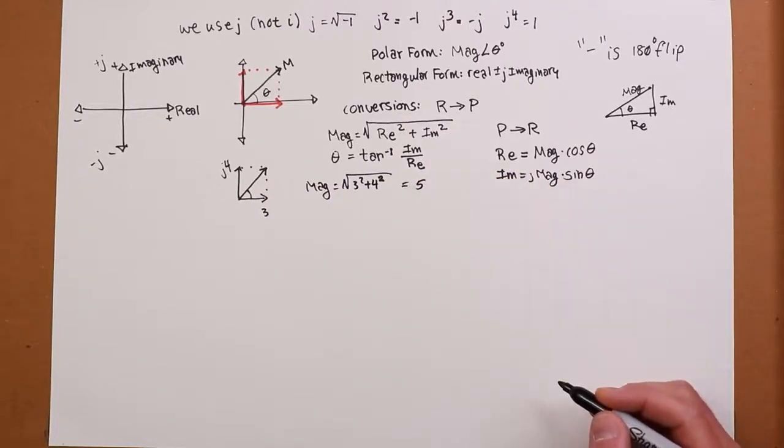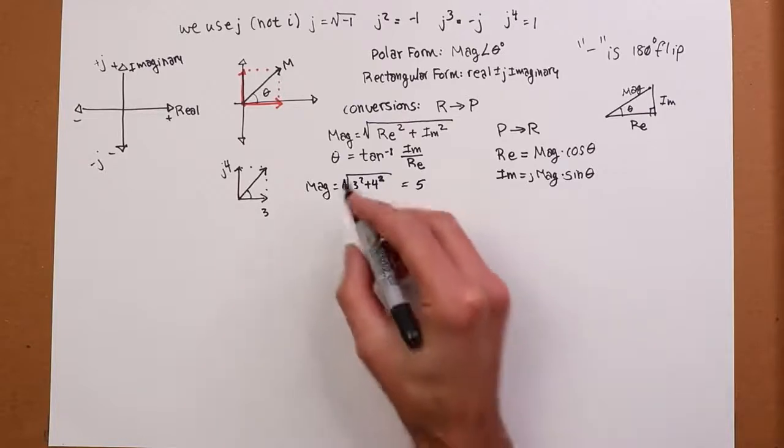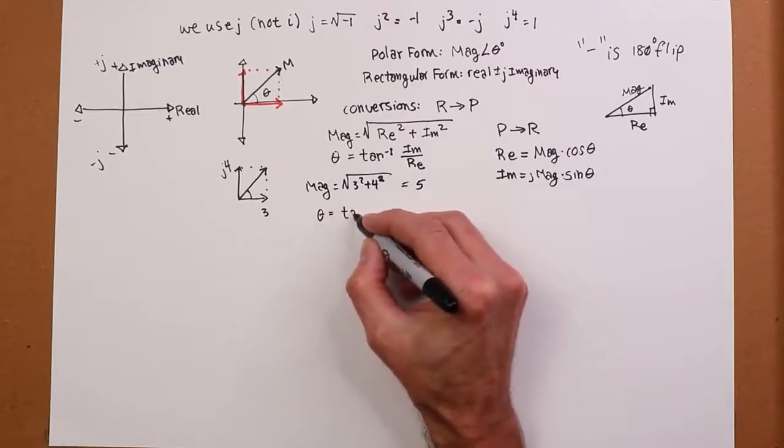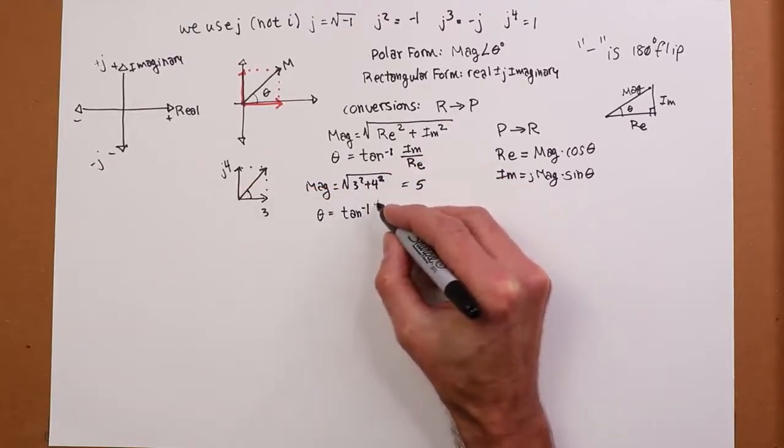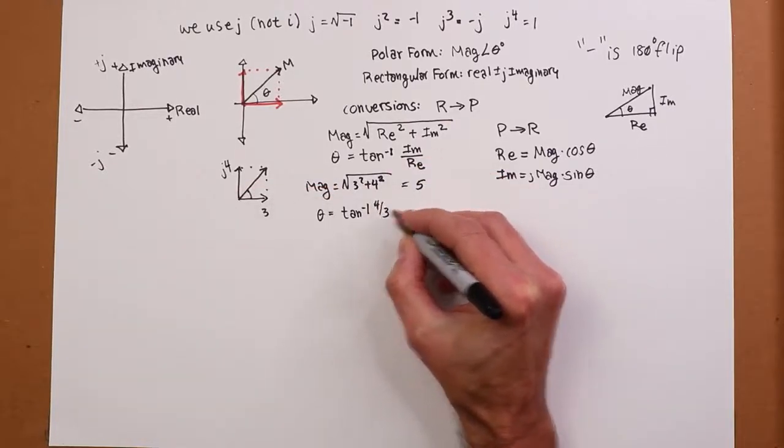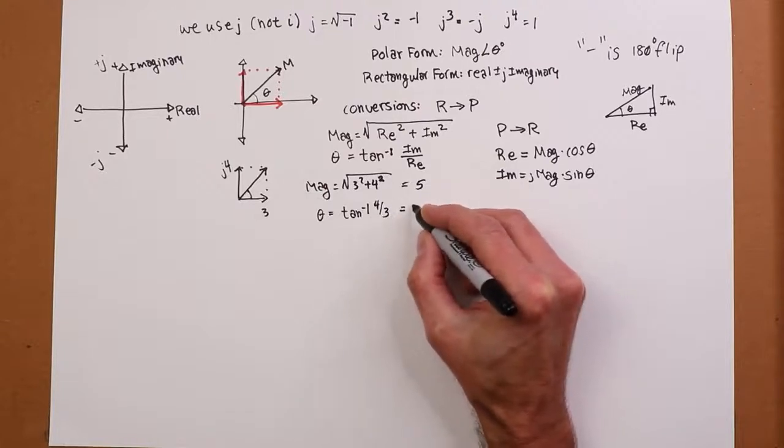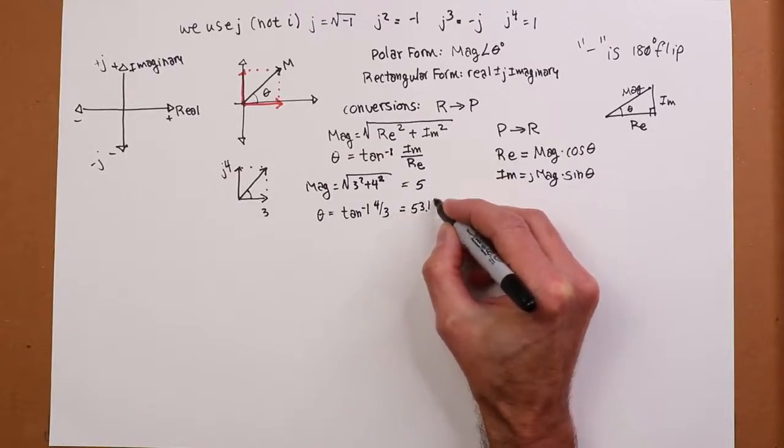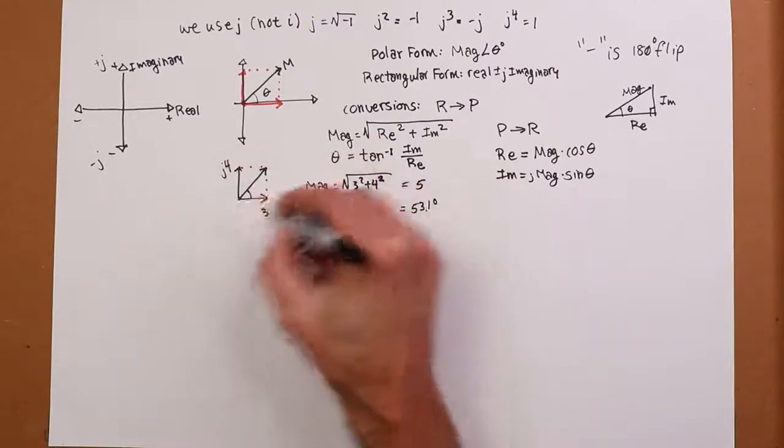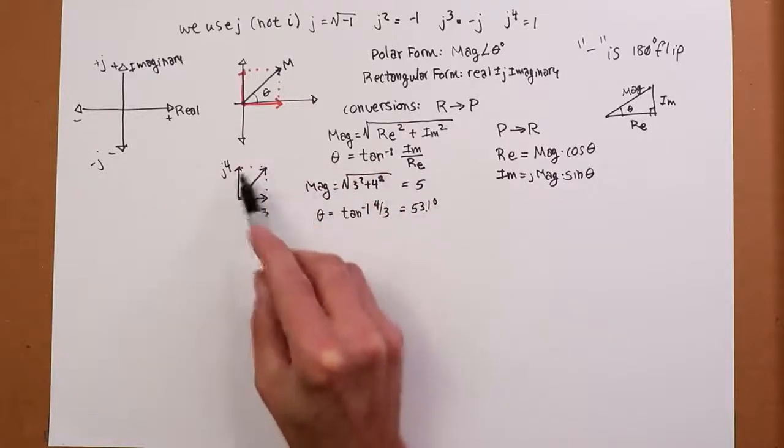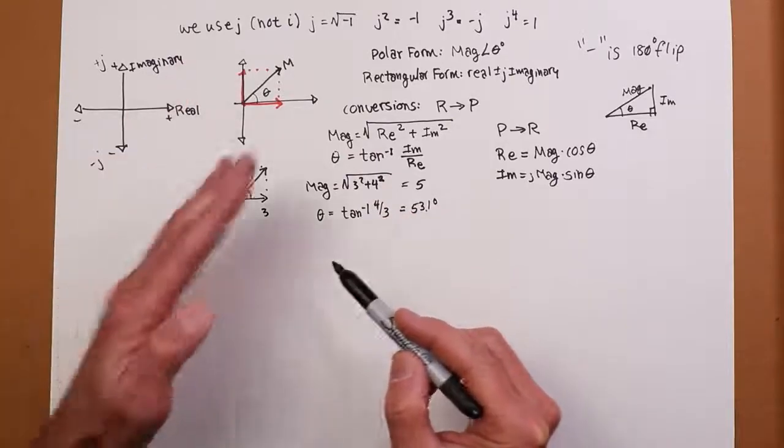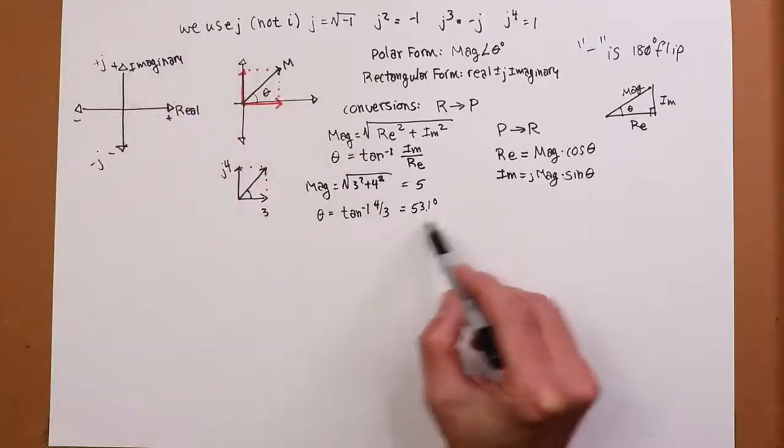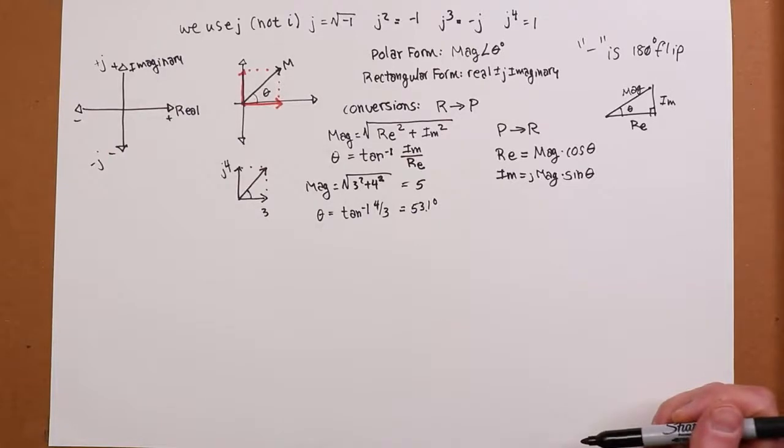And then the angle will simply be the arctan of 4 over 3, 4 thirds. And that's going to work out to 53.1 degrees. And that makes sense. If you just look at this little diagram here, this is longer than the J4, and 5 looks good. Because this is longer than this one, you expect it to be a little bit more than 45. So 53.1, yeah, that seems reasonable.